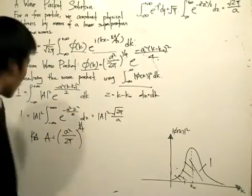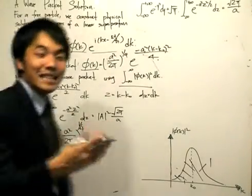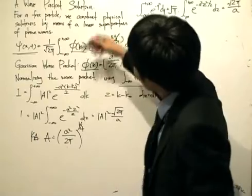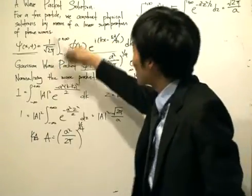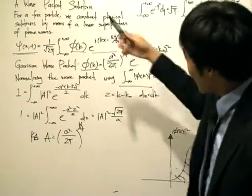And then now we can carry out the Fourier transform. Normalize the Gaussian wave packet first. Normalize the function φ that we're going to use for our Fourier transform before we carry out the integration for our Fourier transform. Okay, and let's do that now.